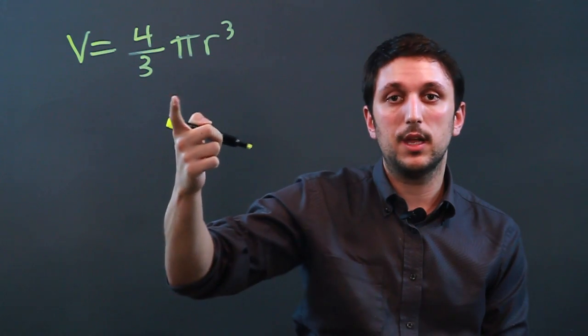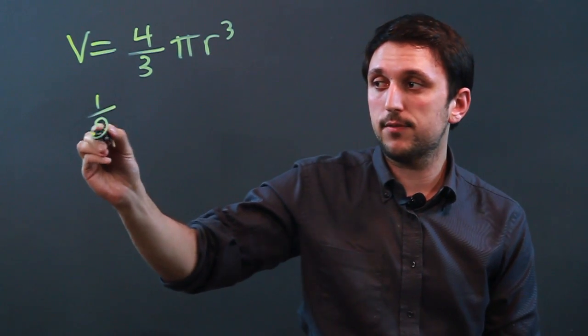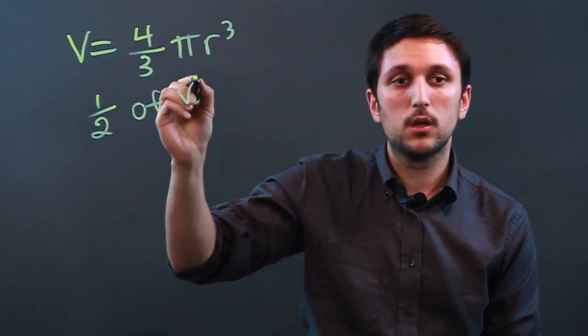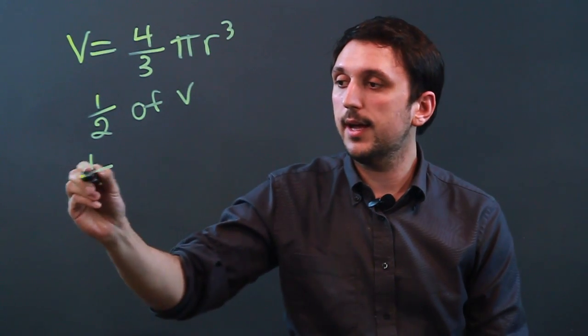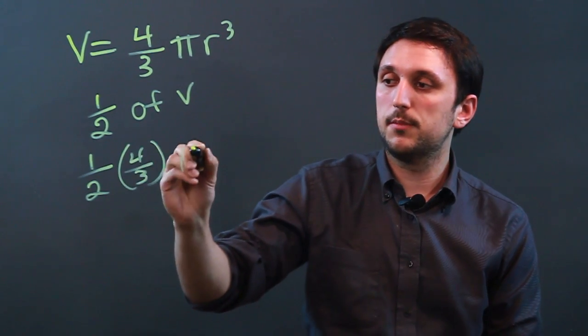The first thing we need to know is how much is the partial volume. If we're saying we want one-half of the volume, what we can do is say one-half times four-thirds times pi r cubed.